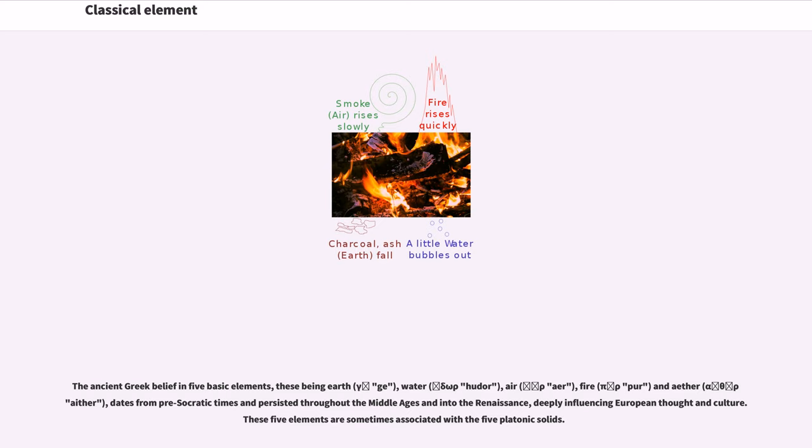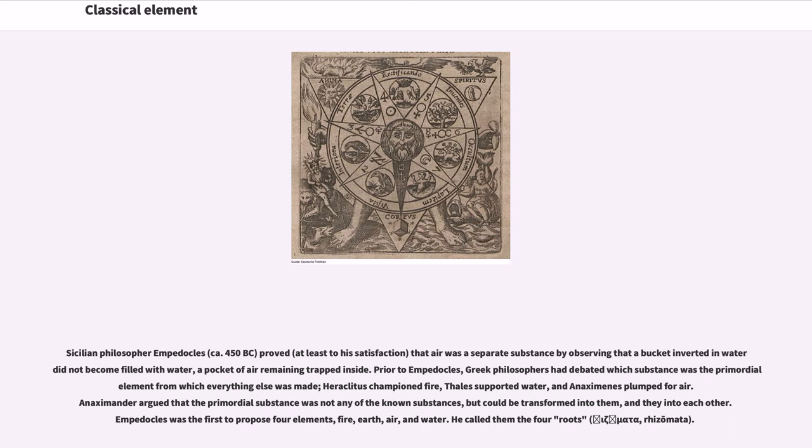Sicilian philosopher Empedocles, circa 450 BC, proved, at least to his satisfaction, that air was a separate substance by observing that a bucket inverted in water did not become filled with water, a pocket of air remaining trapped inside. Prior to Empedocles, Greek philosophers had debated which substance was the primordial element from which everything else was made. Heraclitus championed fire, Thales supported water, and Anaximenes plumped for air. Anaximander argued that the primordial substance was not any of the known substances, but could be transformed into them, and they into each other. Empedocles was the first to propose four elements: fire, earth, air, and water.